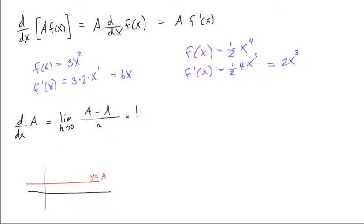And so this is going to give us, this is going to equal the limit of h goes to zero, zero over h. And that's equal to the limit as h goes to zero of zero, which is equal to zero.